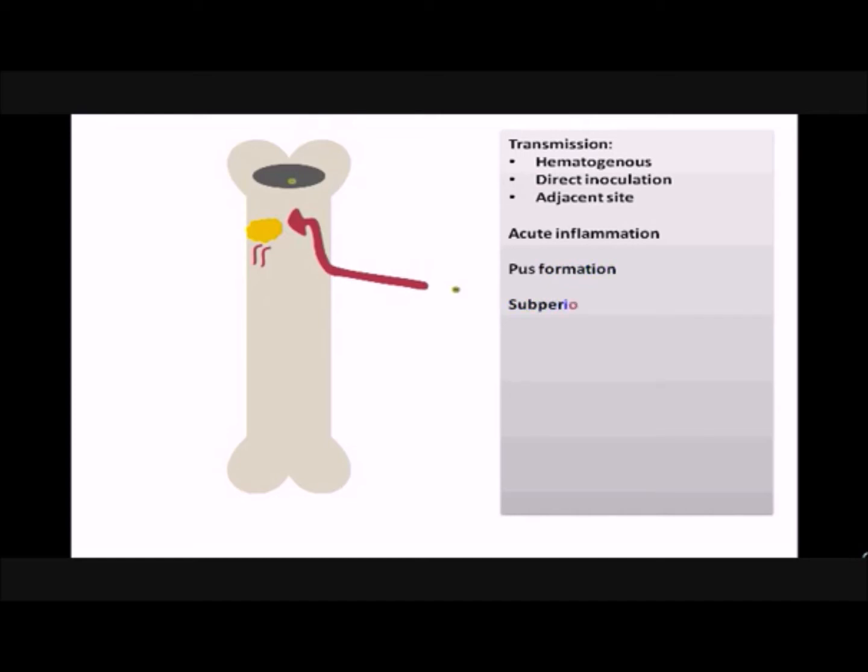The pressurized focus of infection can also force its way to the bone cortex and ultimately under the periosteum, which can separate it from the underlying bone, leading to further compromise of the bone's vascular supply, contributing to bone ischemic necrosis.